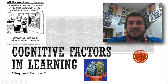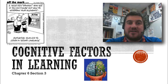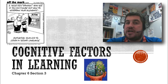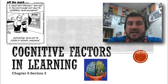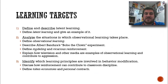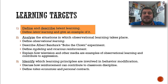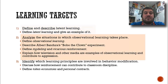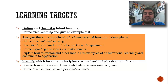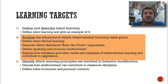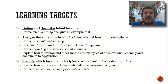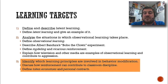Hi and welcome back to psychology class with Mr. Snyder. Today we are going to finish talking about how people learn and we'll talk about cognitive factors that go on in learning, not just behavioral factors. Learning targets for today: we will describe different kinds of learning such as latent learning, analyze situations in which observational learning takes place, and identify which learning principles are involved in behavior modification.